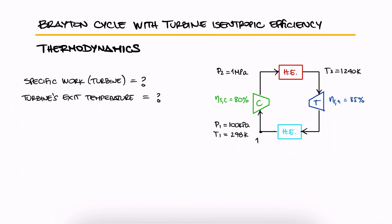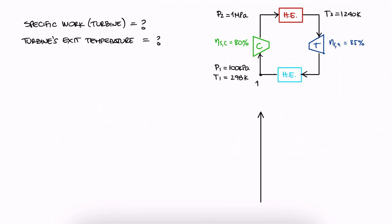You've probably noticed already that this is the same Brayton cycle setup we used for the first example. The difference is that this time we're interested in the values for the turbine. Make sure you've watched the first example first.